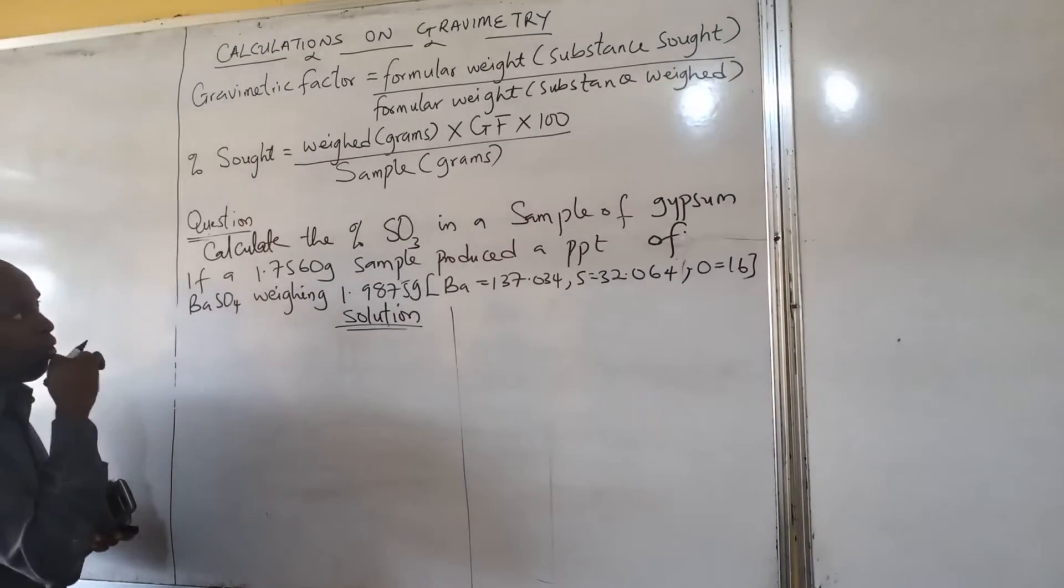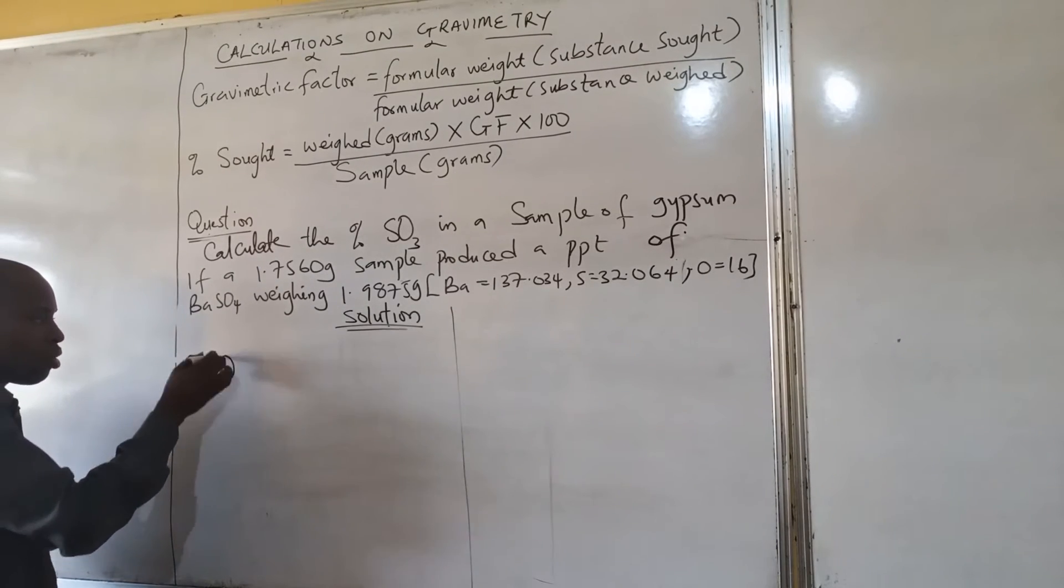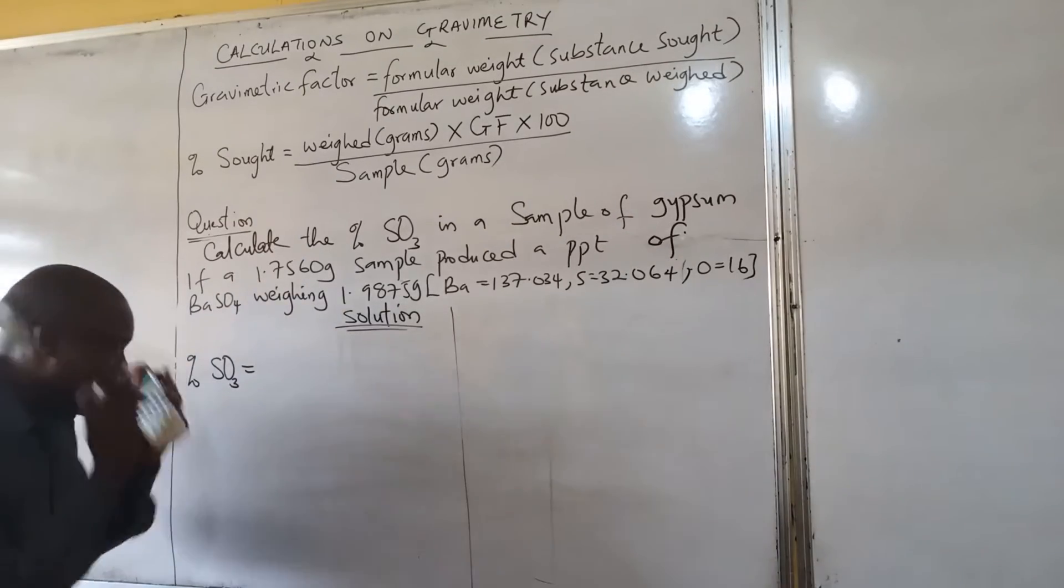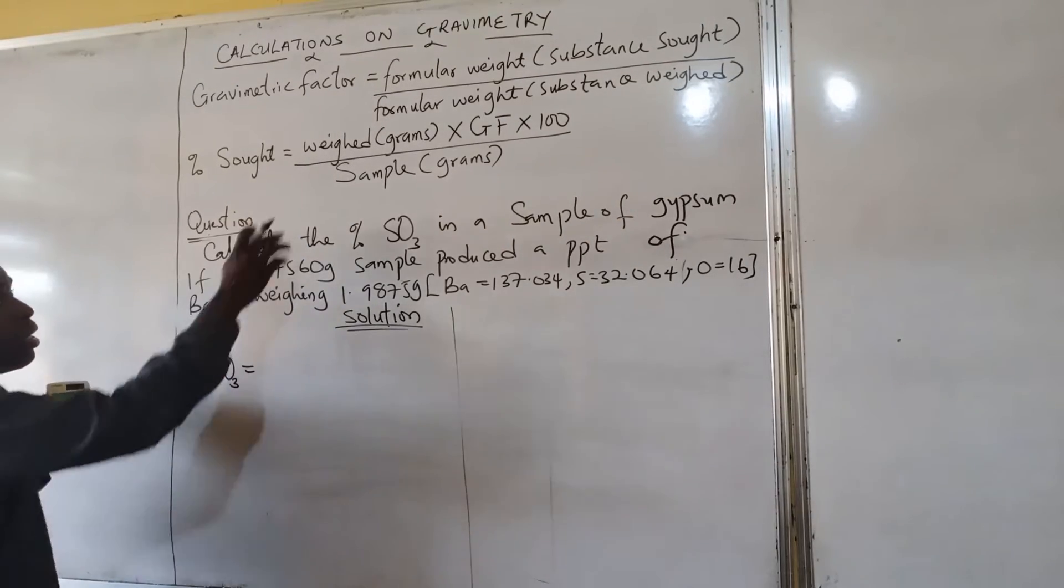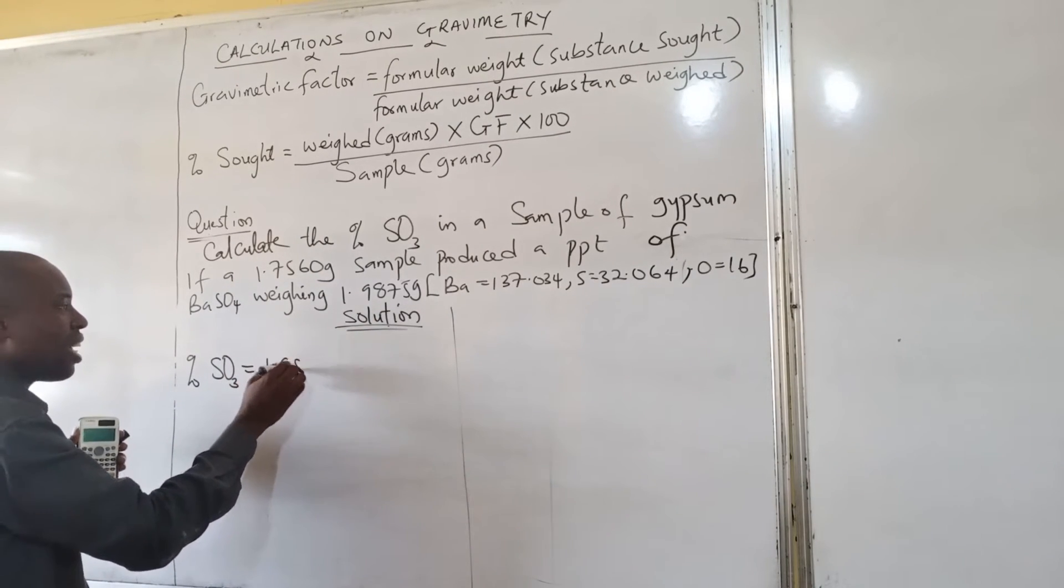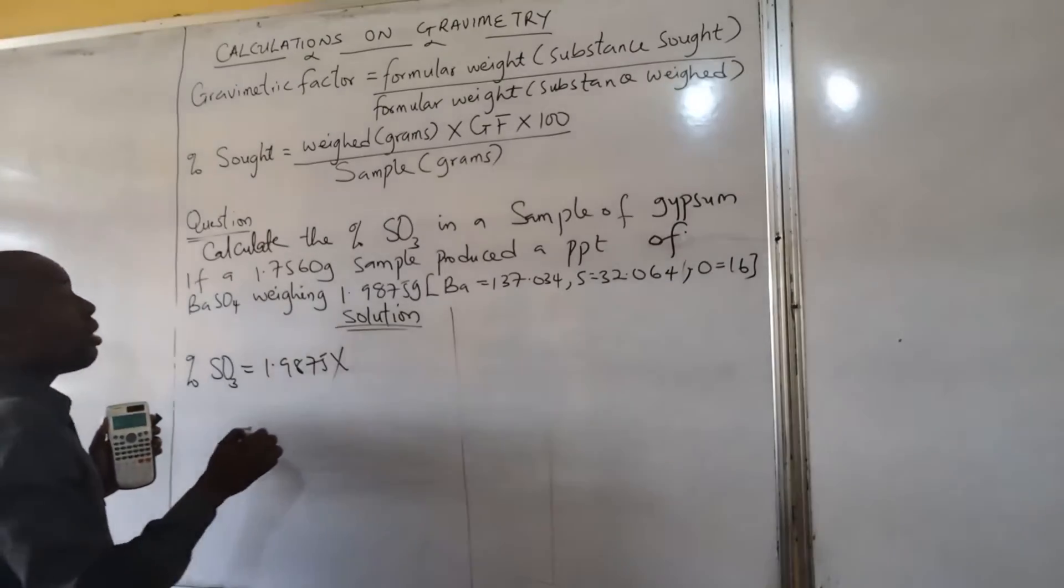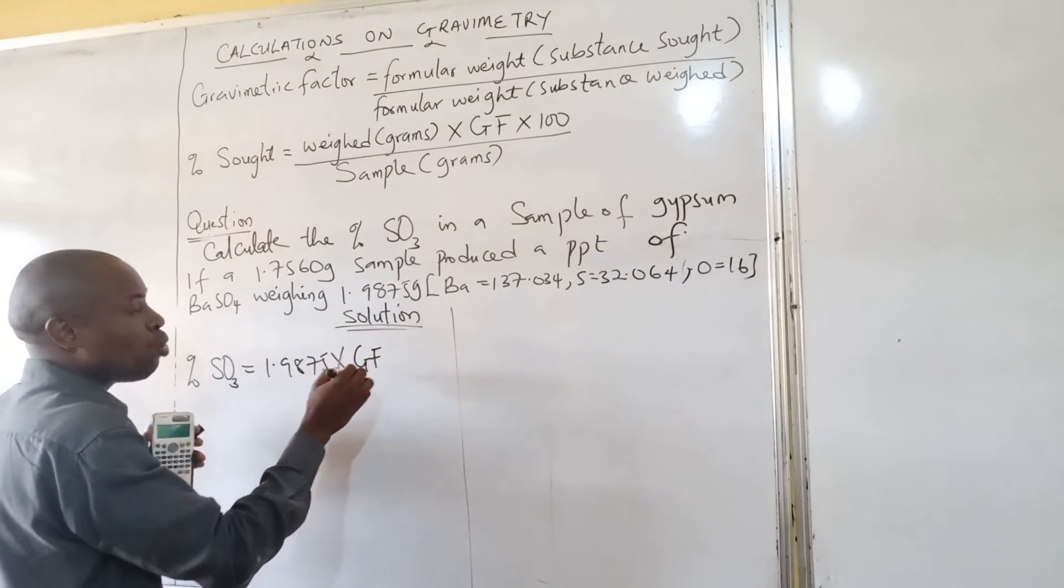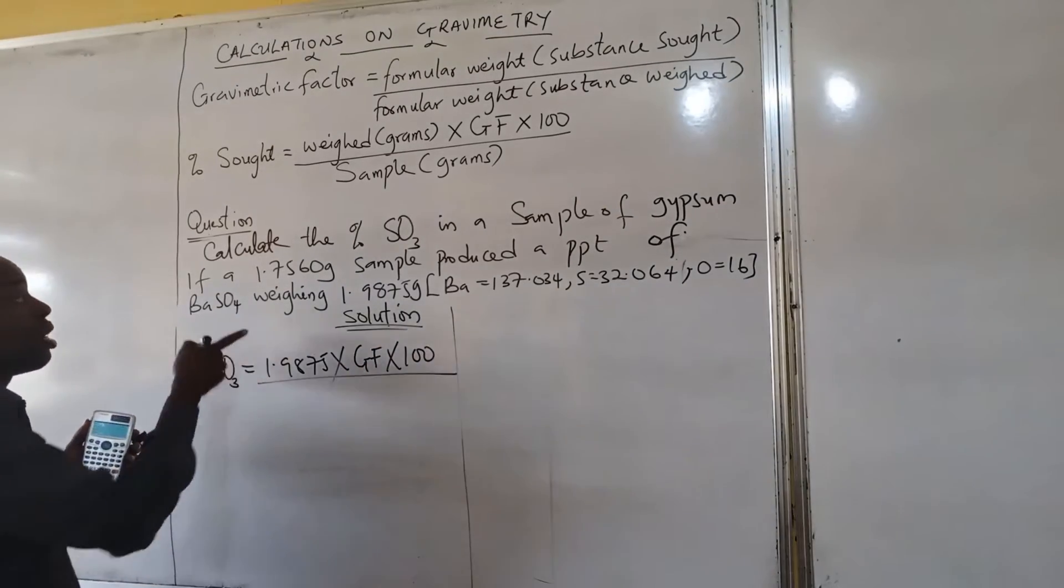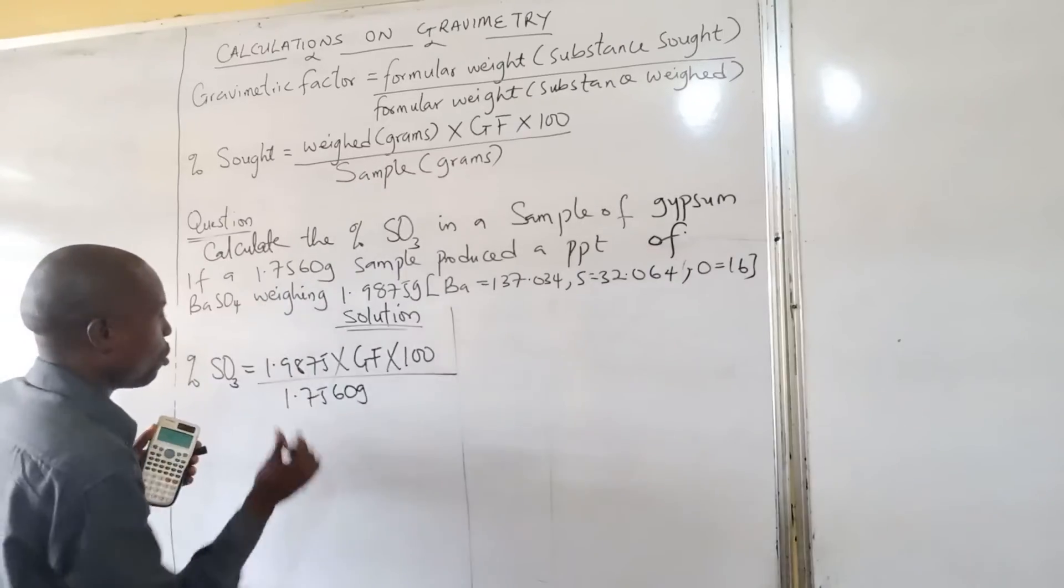So what do we do? When you are aware, the same pattern, percentage of the SO₃ is equal to just know the formula. The weight sample we get is 1.9875 multiplied by gravimetric factor times 100 over that of the sample is 1.7560 gram.